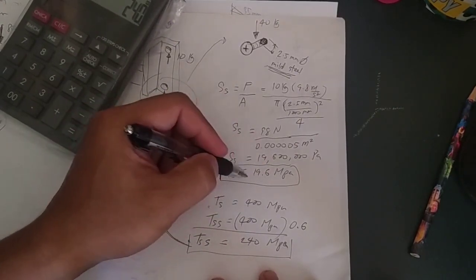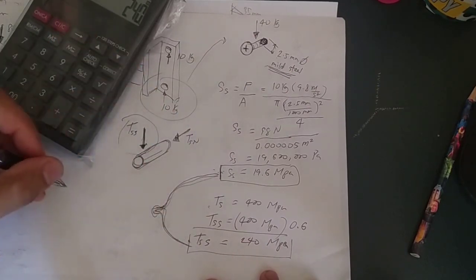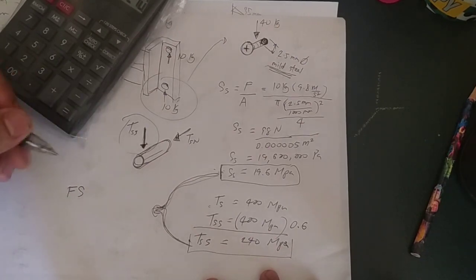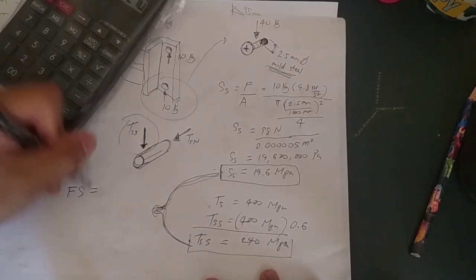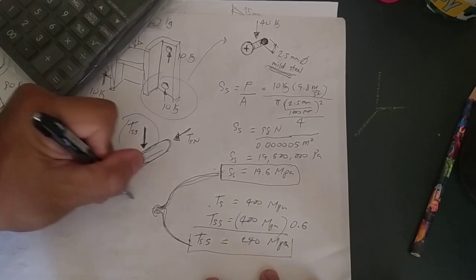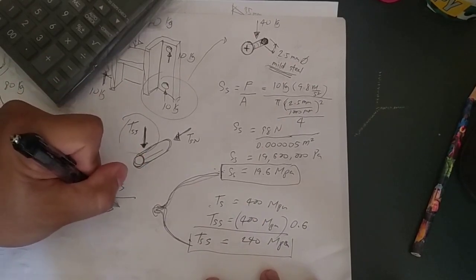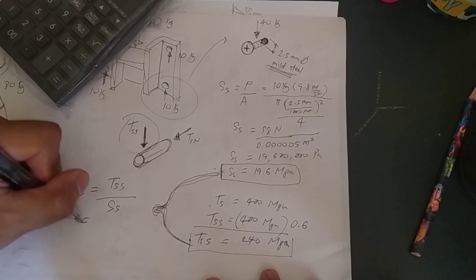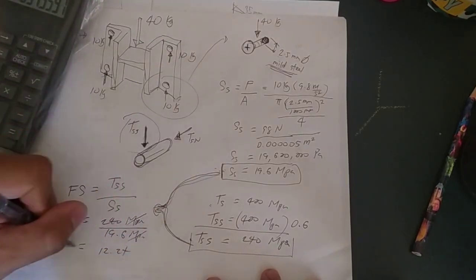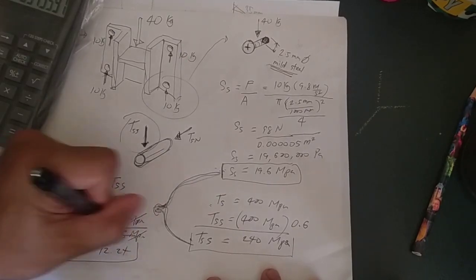But to be more specific, it's better to calculate what we call factor of safety, FS. So you simply calculate it like this: tensile strength in shearing divided by the shear stress experienced by the screw. So this is 12.24, it doesn't have units. So this is our factor of safety.